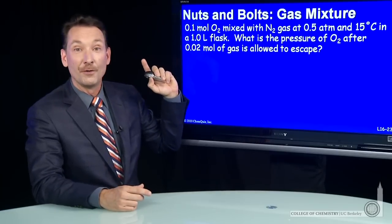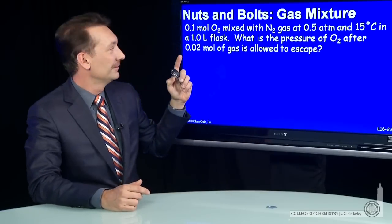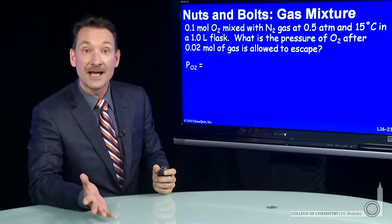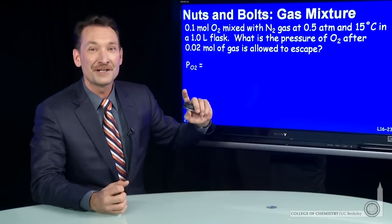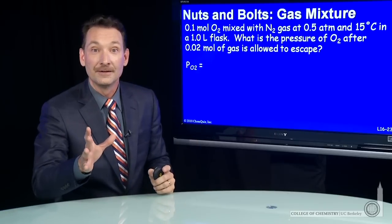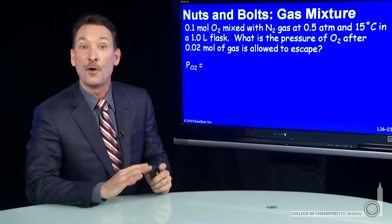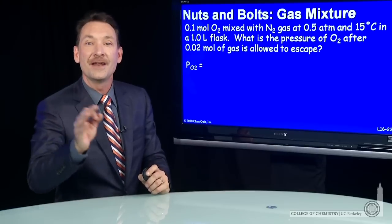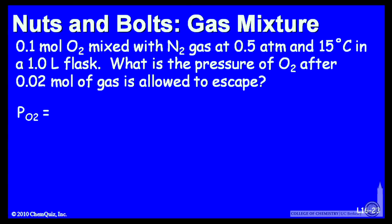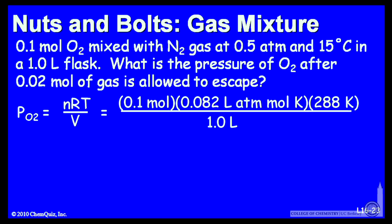I can do that from the number of moles, the temperature, and the size of the flask — applying the ideal gas law. There's also nitrogen in the flask, but it doesn't matter. The oxygen behaves like it has the whole flask to itself. So let's ignore the nitrogen and figure out what the pressure would be if there were only oxygen. That would be nRT over the entire volume: a tenth of a mole, the temperature in Kelvin, and the entire flask. That gives us a partial pressure of 2.4 atmospheres of oxygen.